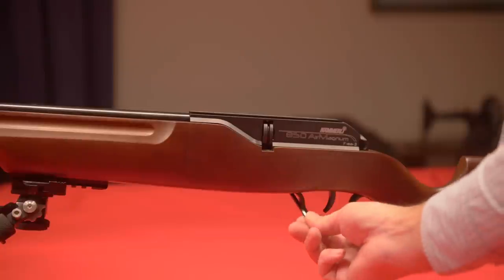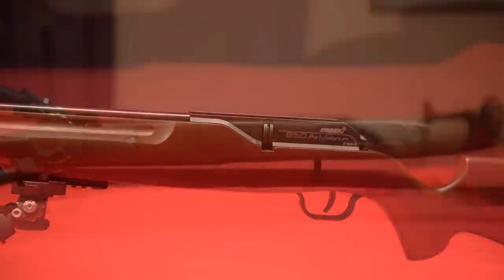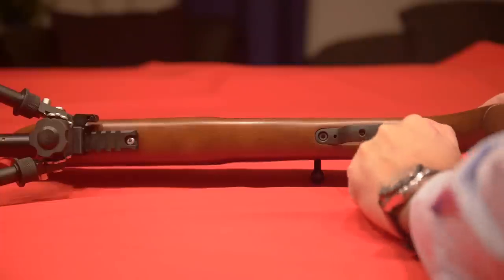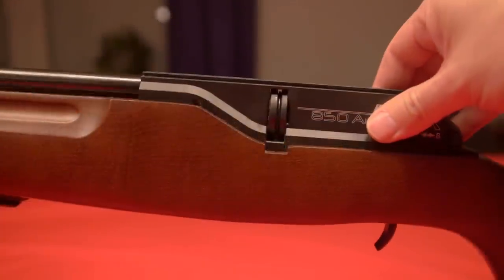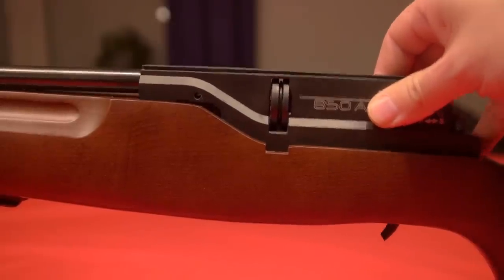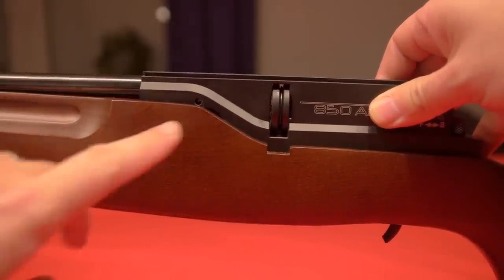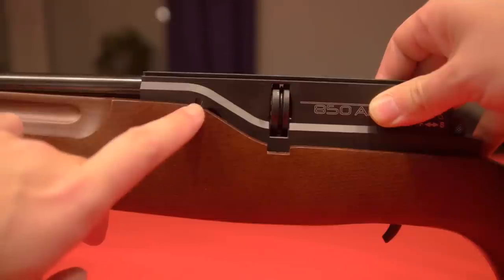Next, we'll have to remove the two hex screws that are holding the system to the stock. On my edition of the 850, which is the classic, you cannot remove the system from the stock before you remove the barrel. So it needs to go.